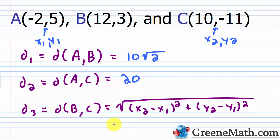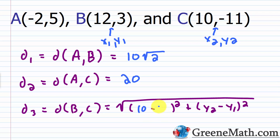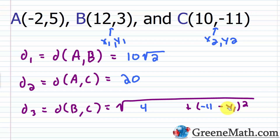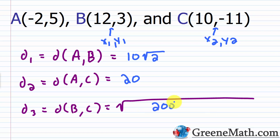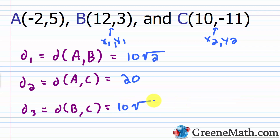For the distance between B and C: x₂ = 10, x₁ = 12, so 10 − 12 = −2, squared is 4. Then y₂ = −11, y₁ = 3, so −11 − 3 = −14; −14 squared is 196. So 4 + 196 = 200, and the square root of 200 again simplifies to 10√2.